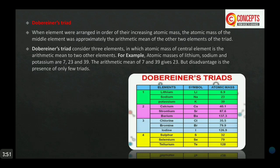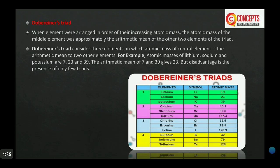He grouped elements into sets of three elements. He said that when elements were arranged in increasing order of their atomic mass, the atomic mass of the middle element was approximately the arithmetic mean of the other two elements of the triad. For example, for the triad of Lithium, Sodium, and Potassium: Lithium has atomic mass approximately 7 and Potassium has atomic mass 39, so their arithmetic mean comes out to be 23, which is the atomic mass of Sodium.